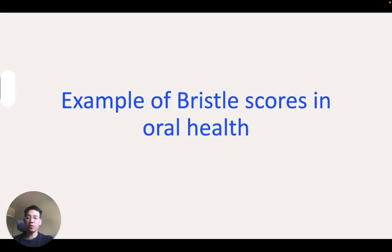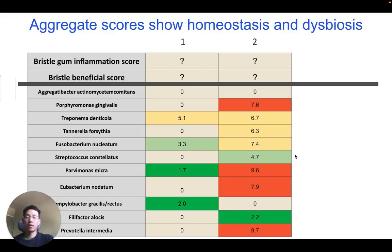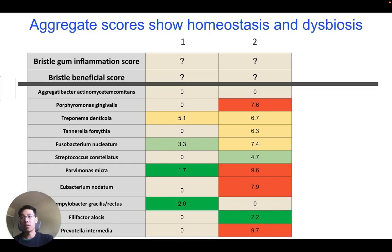Now I'll take you through a real-world example of homeostasis and dysbiosis in improving oral health with a Bristle test. In this table, each row is a different pathogenic species or score, and each column is a test from a Bristle patient. The Bristle gum inflammation score uses a proprietary algorithm to summarize the abundance of gum inflammatory pathogens and the risk of worsening gum disease. The Bristle beneficial score summarizes the abundance of beneficial species that help stabilize the community. The beneficial species are not shown in this table, as there are dozens of species that contribute to this score. Each box is color-coded from a healthy green to an unhealthy red, with yellow signifying somewhere in between, and higher numbers within the boxes represent a higher abundance of each species.